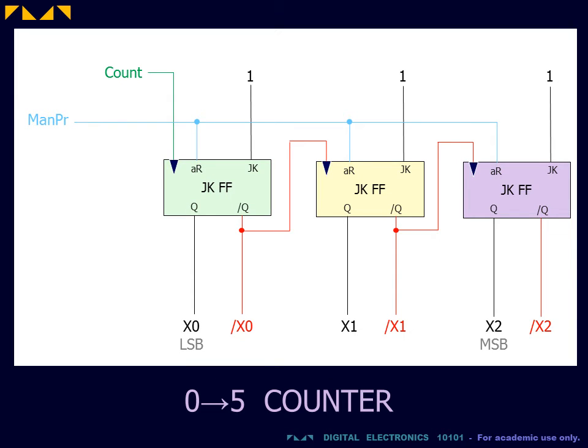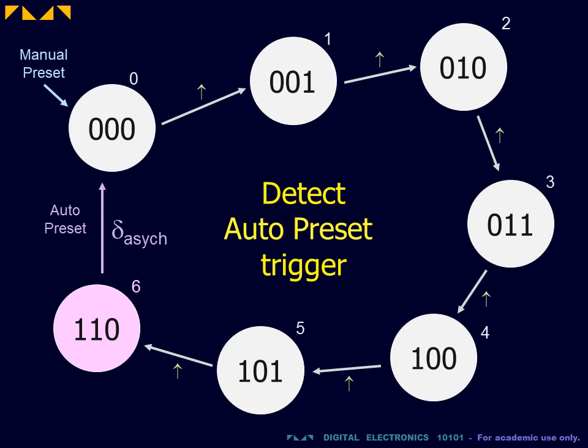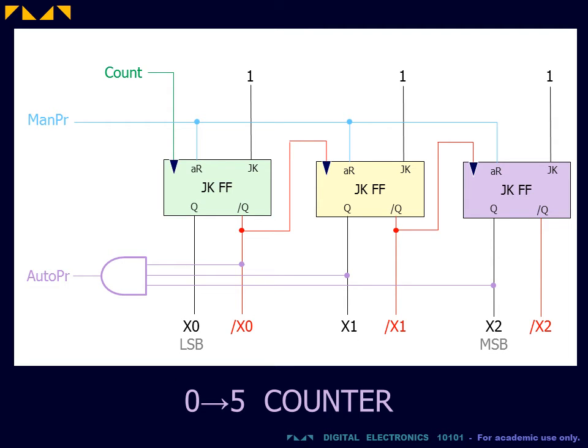There are two steps to the modified design. First, we must detect the 110 state that triggers the immediate auto preset. This signal is obtained from an AND gate, which detects the correct combination of Q and Q bar outputs from the flip-flops.